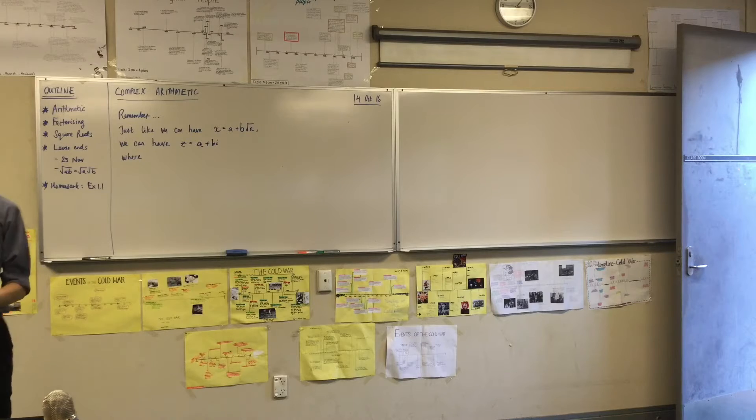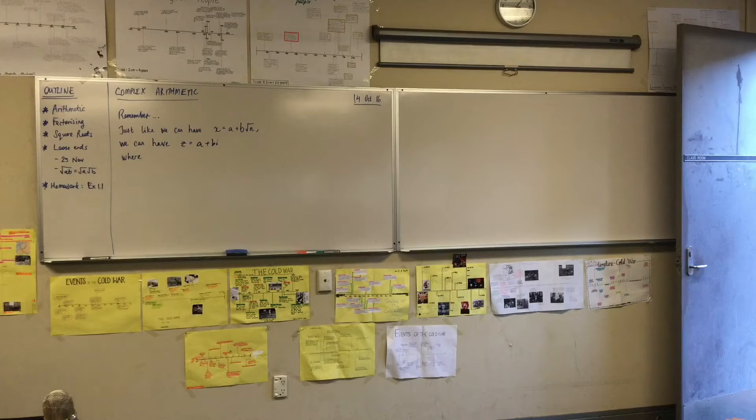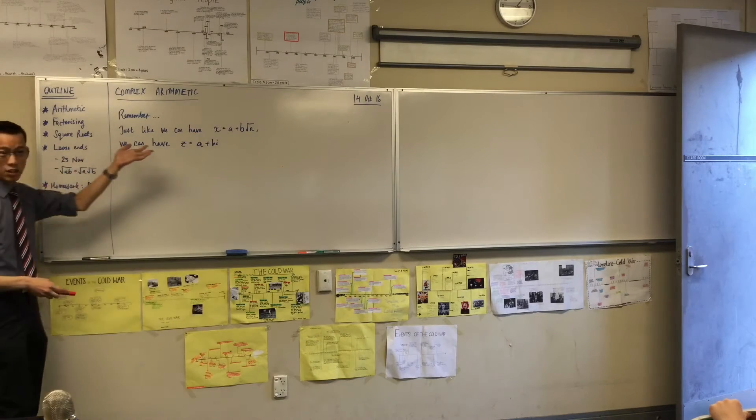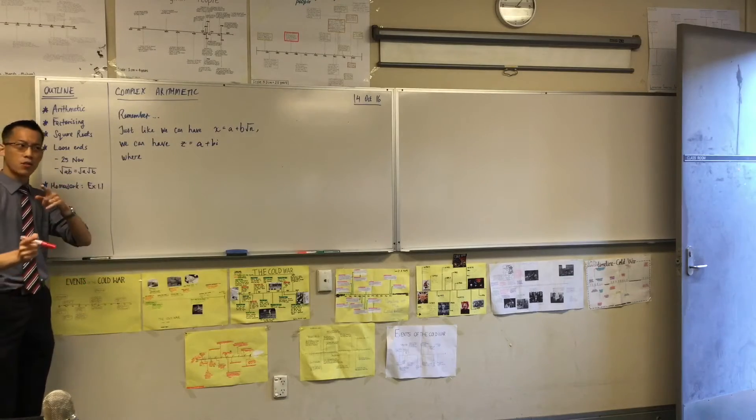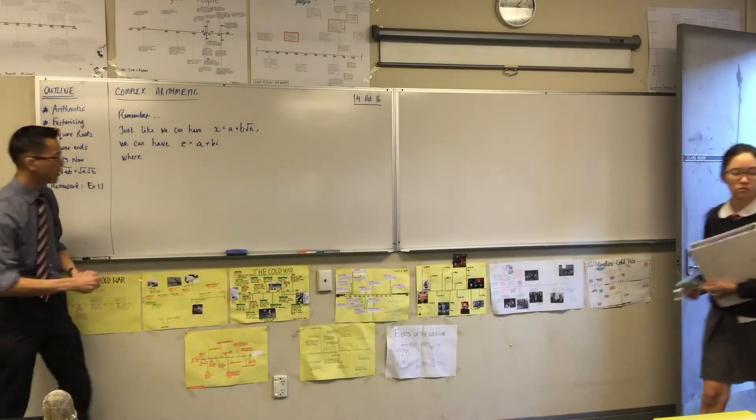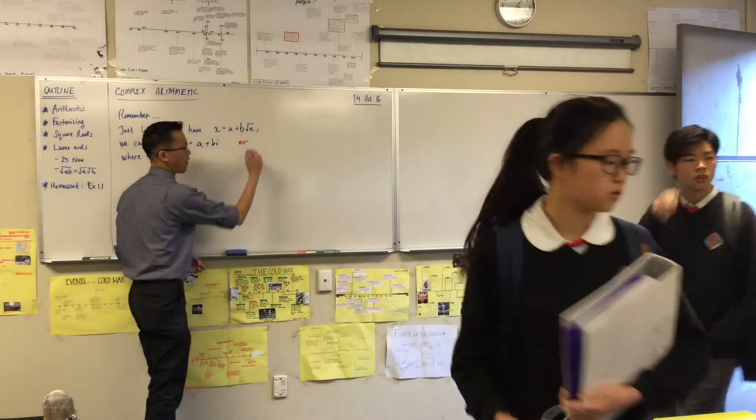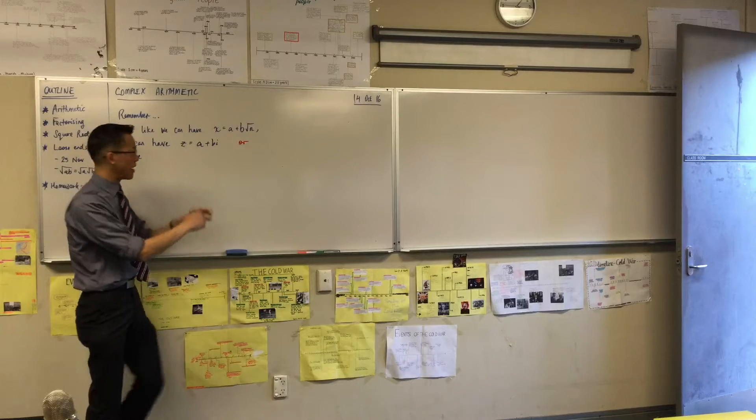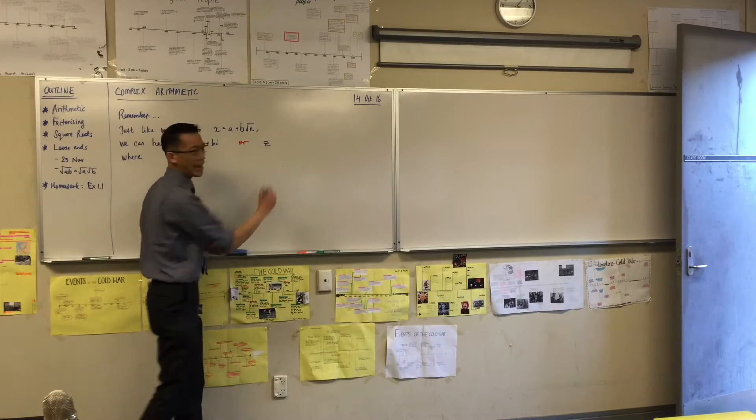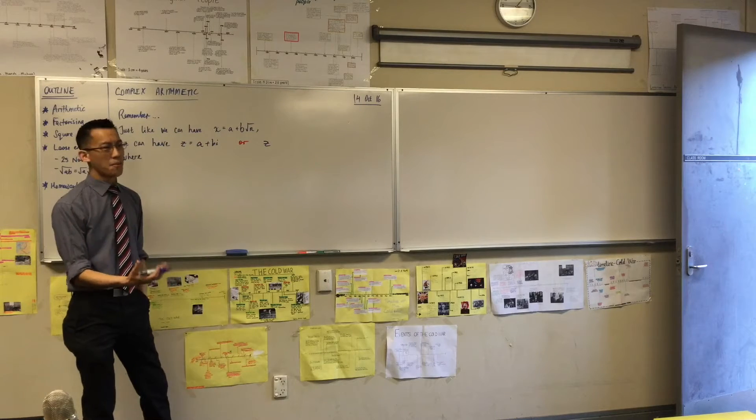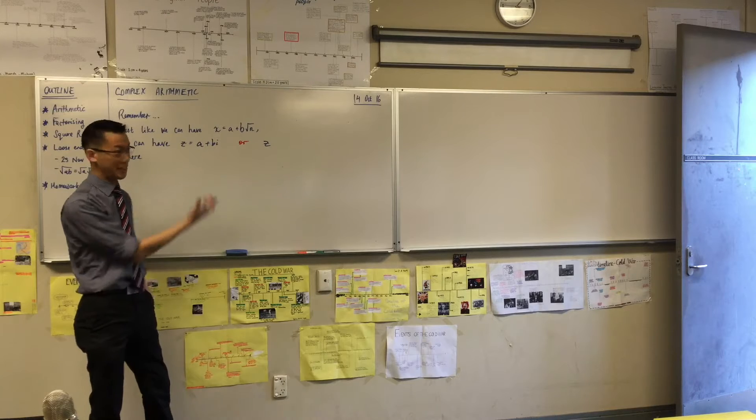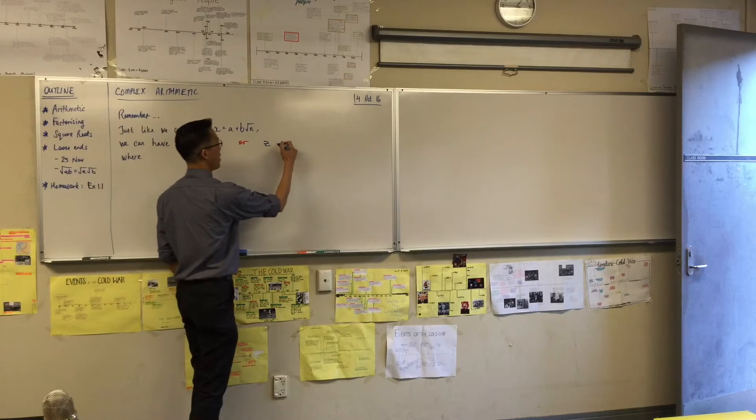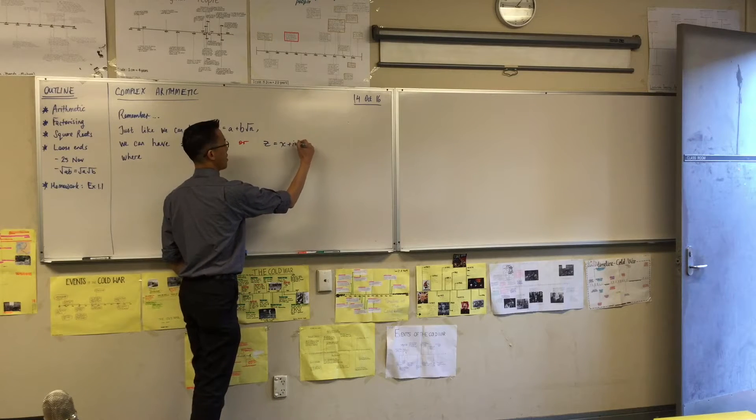By the way, just on the side where you've written this, there's another very frequent way of writing down the complex number, which we're going to get onto the reasons why are next to it. But for now, I want to show you what the way of writing it is. Instead of using a and b, frequently, the other pair of pronumerals used to indicate pairs of things is x and y.